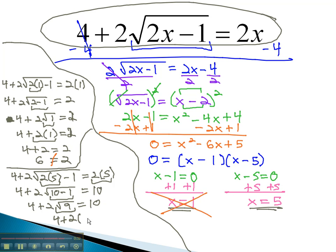The square root of 9 is 3. Hopefully, this will equal 10. 2 times 3 is 6, and sure enough, 4 plus 6 is 10. Because it checks out and gives us a true equation, this means the x equals 5 does work in the original equation.